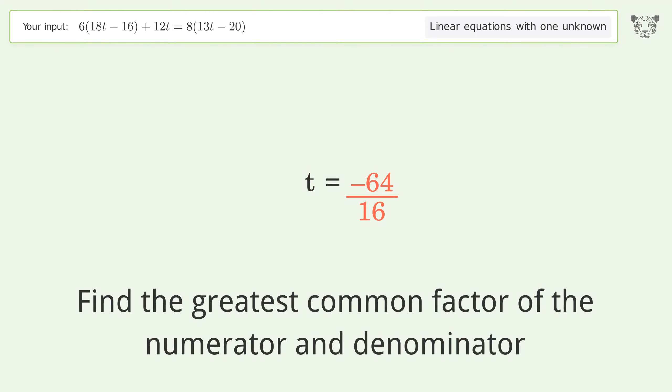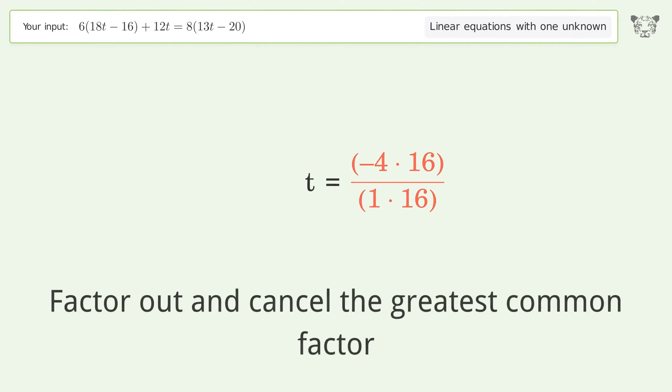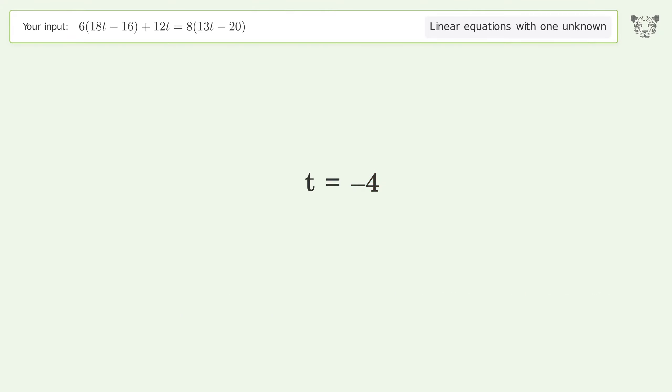Find the greatest common factor of the numerator and denominator. Factor out and cancel the greatest common factor. So the final result is t equals negative 4.